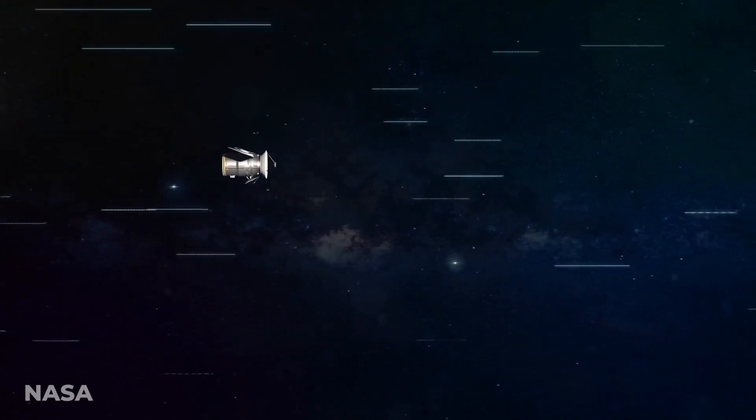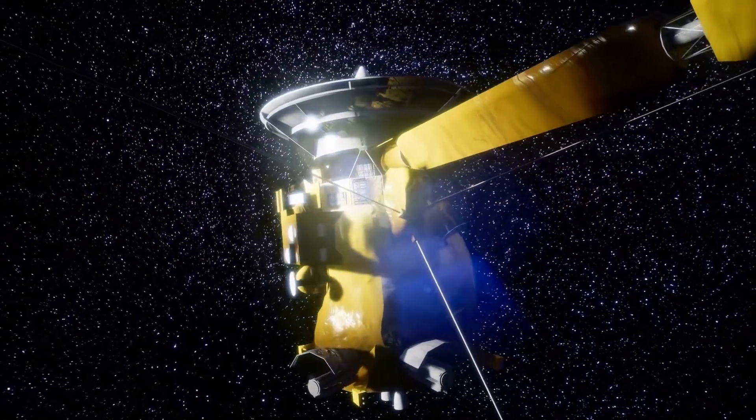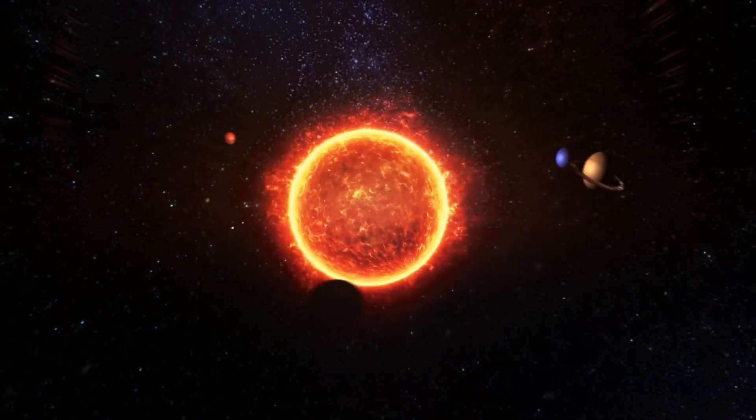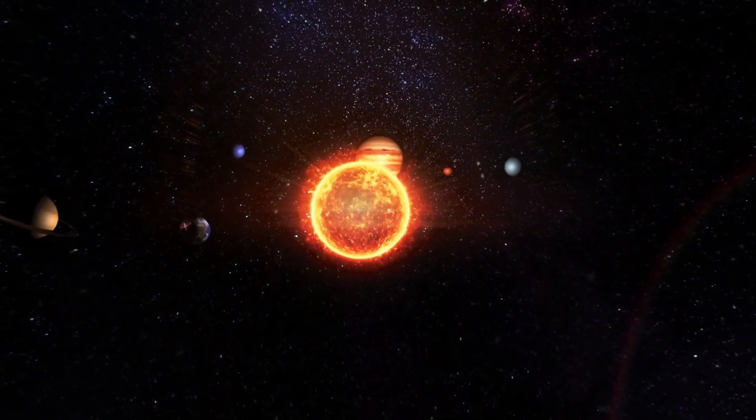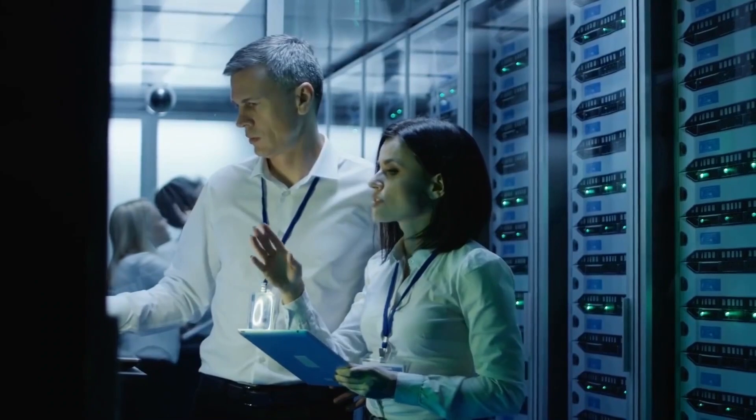On the other hand, Voyager 2 is observed to be moving at a velocity of around 34,000 miles per hour relative to the sun and is more than 11.8 billion miles from Earth. Data from 2019 suggests that Voyager 2 has also gone interstellar.